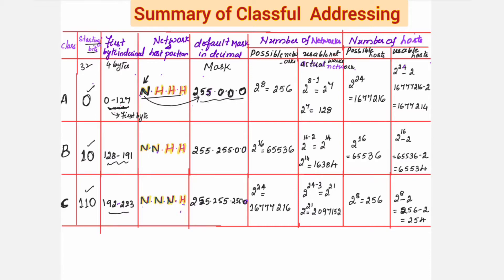The default mask gives you information about how many bits are for the network portion and how many bits are for the host portion. So out of 32 bits, 8 bits are denoting the network portion and 24 bits are denoting the host portion. The network portion bits are written in decimal as 255, and the host portion in decimal becomes 0. This way you can relate these two columns.